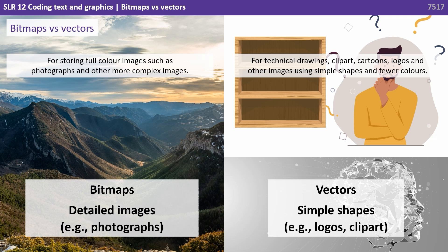So where should we use each one? Bitmaps are best for storing full colour complex images such as photographs. Whereas vectors are much better for technical drawings, clip arts, cartoons, logos, and other images using simple shapes and fewer colours.